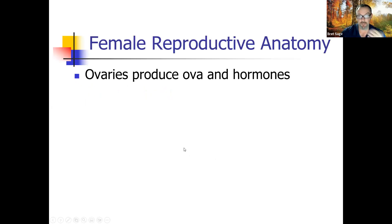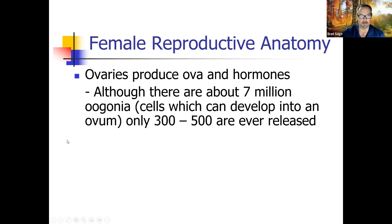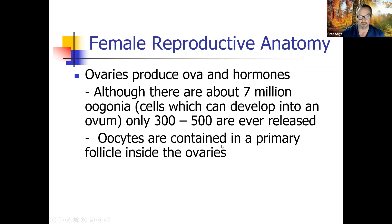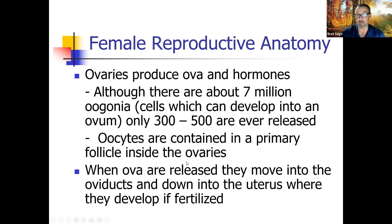Female reproductive anatomy: ovaries produce ova and hormones. Although there are about 7 million oogonia — cells that can develop into ova — only 300 to 500 are ever released. Oocytes are contained in a primary follicle inside the ovaries. When ova are released, they move into the abdomen and are drawn into the oviducts through the fimbrae, then travel down where they're fertilized fairly soon after entering, if everything goes as planned.